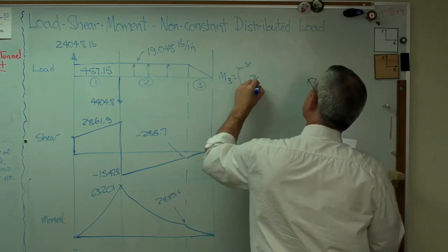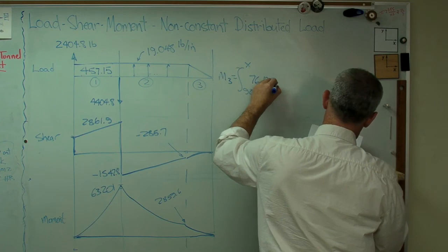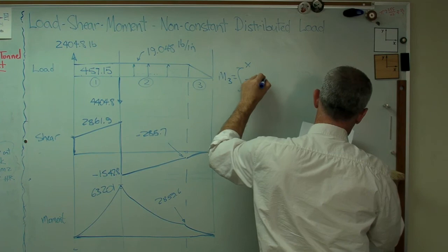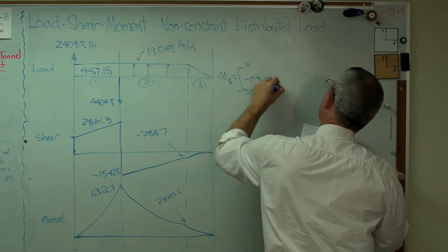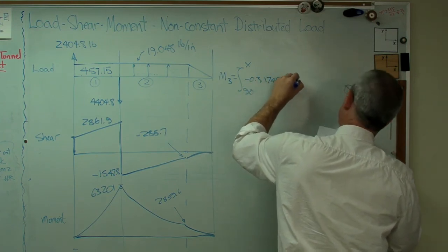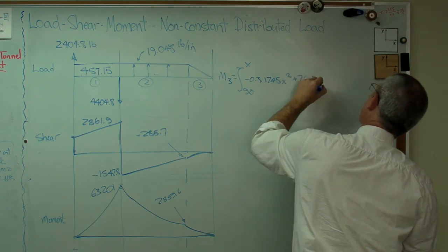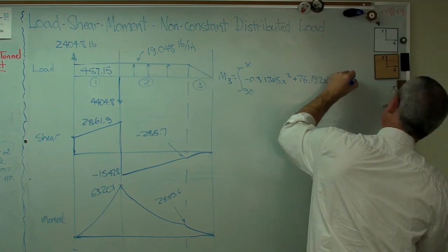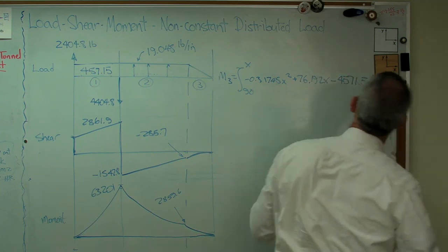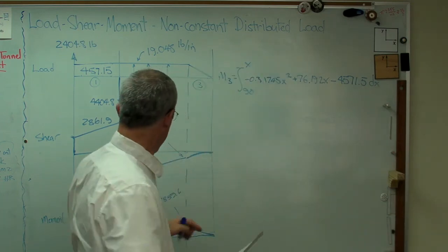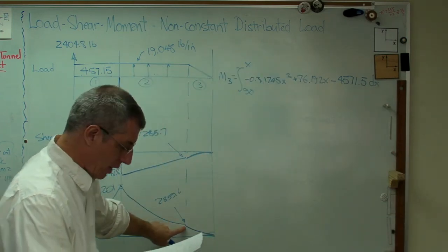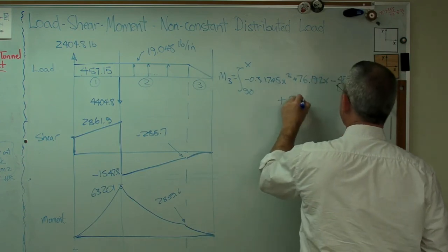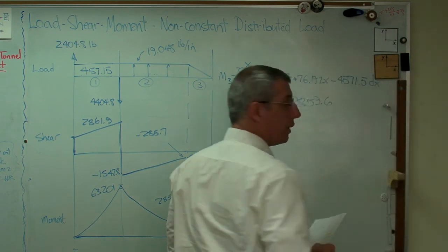So let me write this bad boy out here. 76.192. Oops, I got the wrong order here. Minus 0.31745x squared plus 76.192x minus 4571.5. And that's all got a dx there. I'm almost running out of room. And now I've still got that little offset. So I've got to account for that. And that's going to be plus 2859.6. That's the last thing.